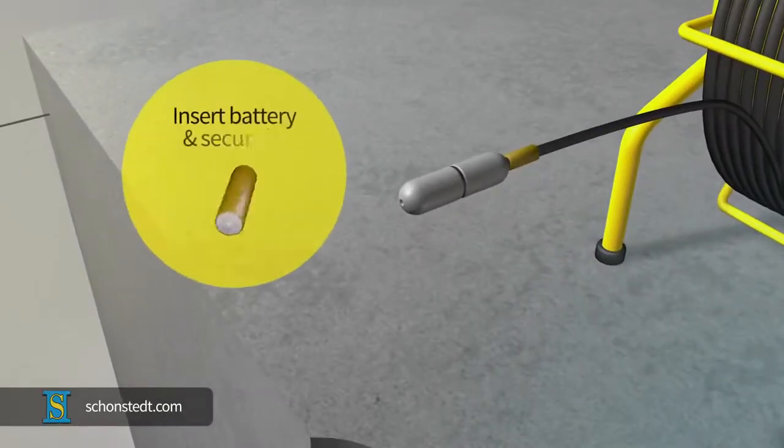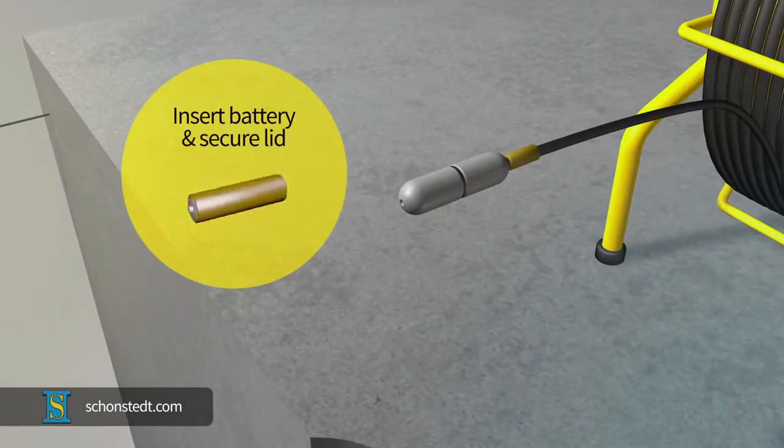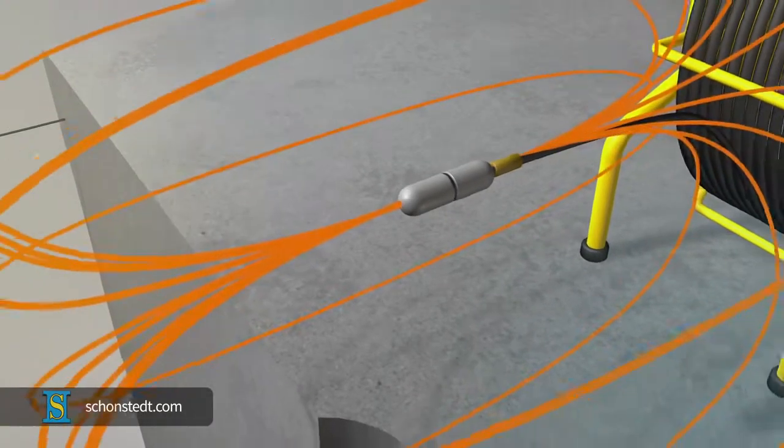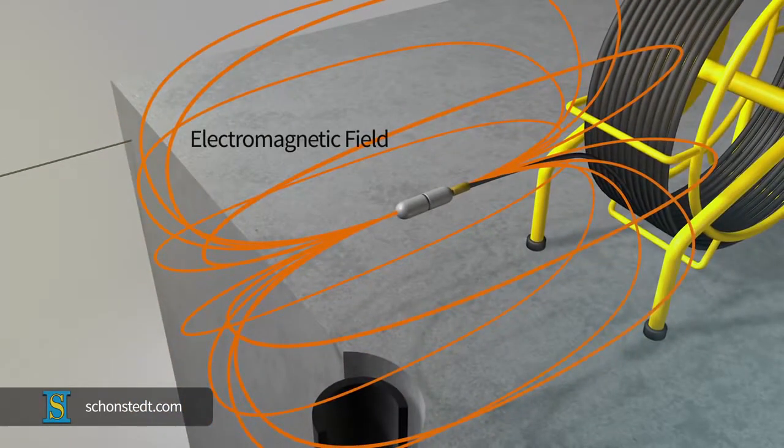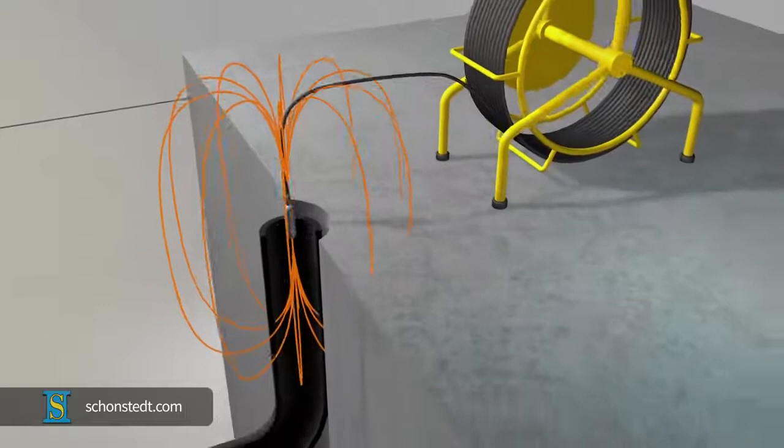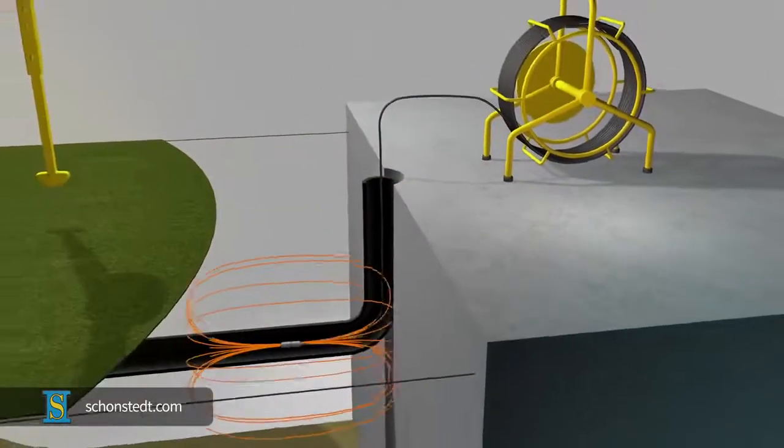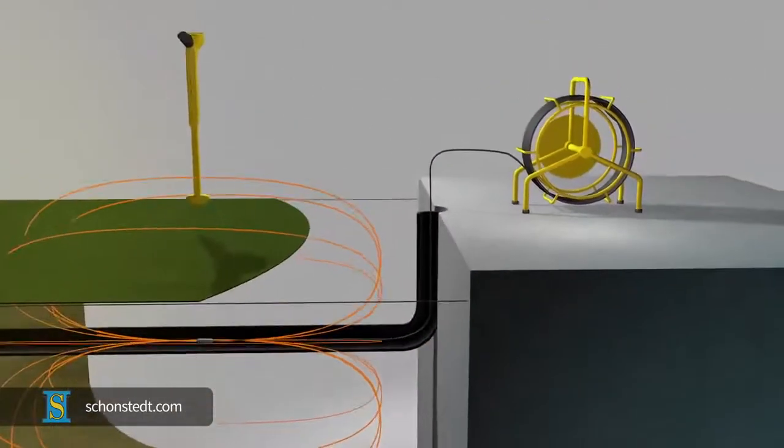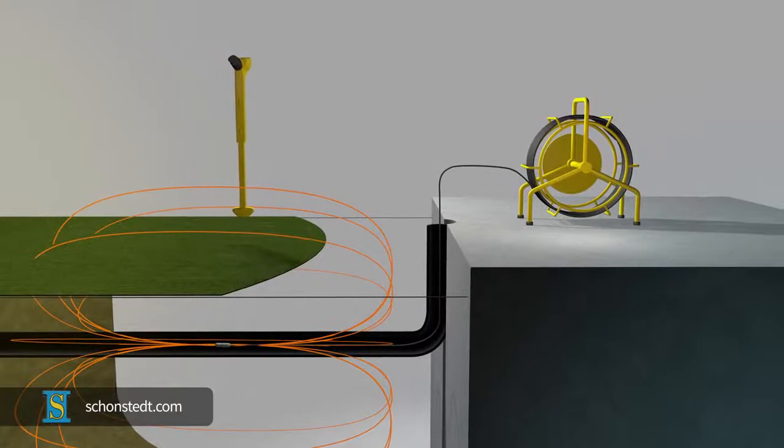Once the battery is inserted with the proper polarity and the lid is tight, the transmitter begins emitting an electromagnetic field of a certain standard frequency that the receiver can detect. The field expands in all directions and once the sonde is inserted inside a PVC pipe and pushed along, that field will move with the sonde and reach above the ground surface, allowing an operator to trace it with a receiver.